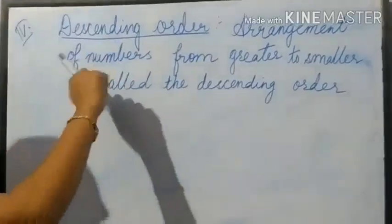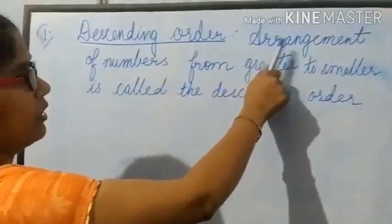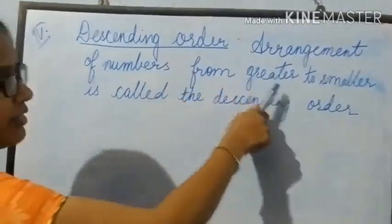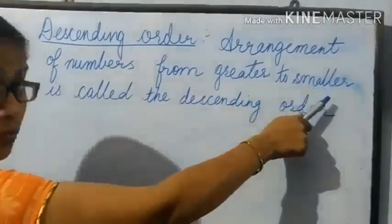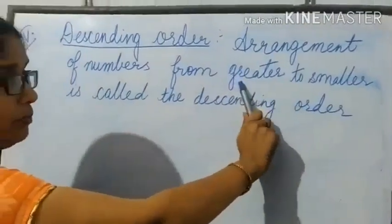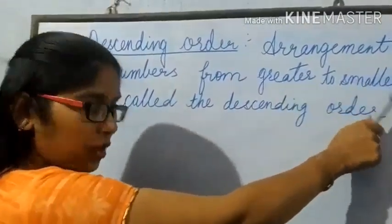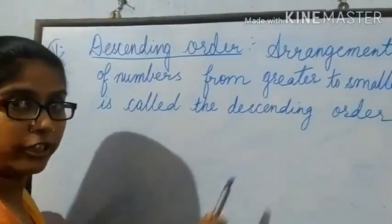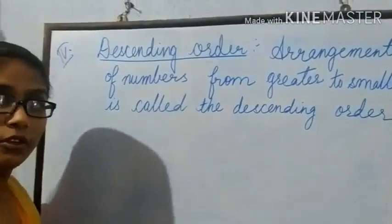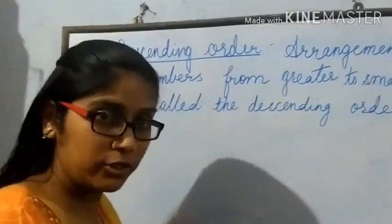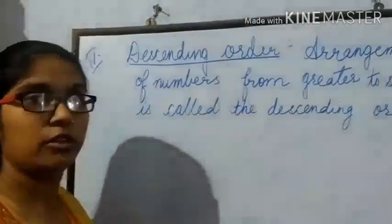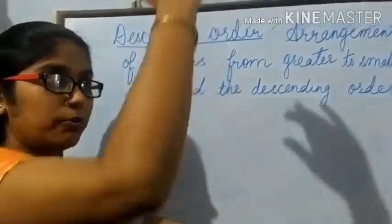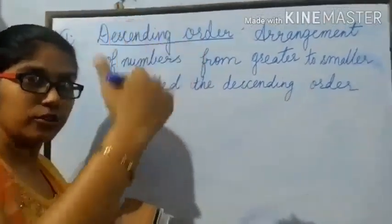Question number 4: descending order. Arrangement of numbers from greater to smaller is called descending order. It means we have to arrange the given set of numbers from greater to smaller.